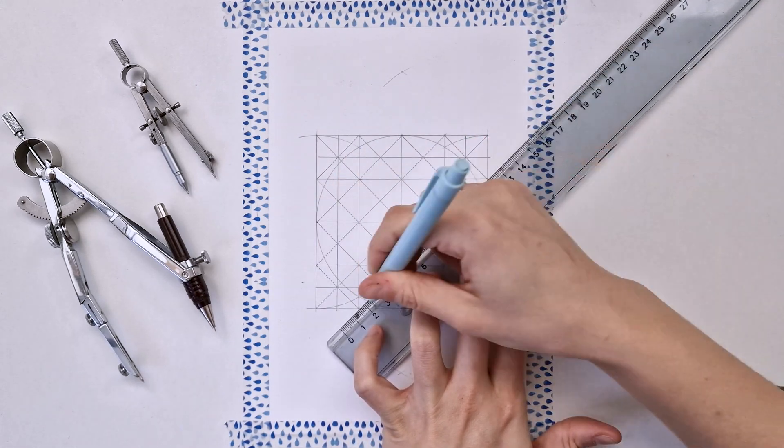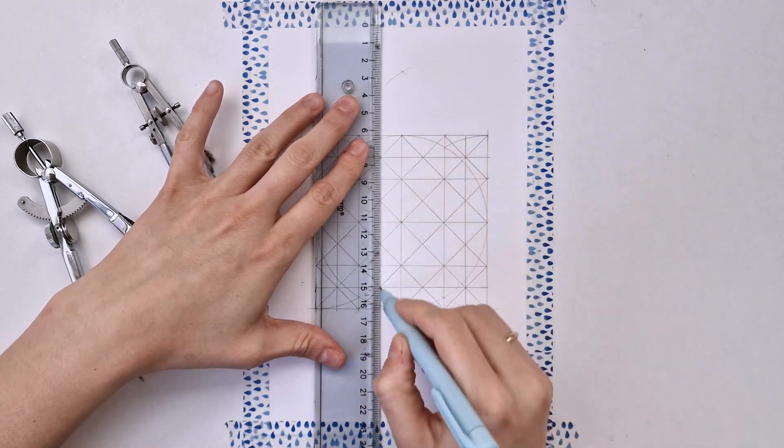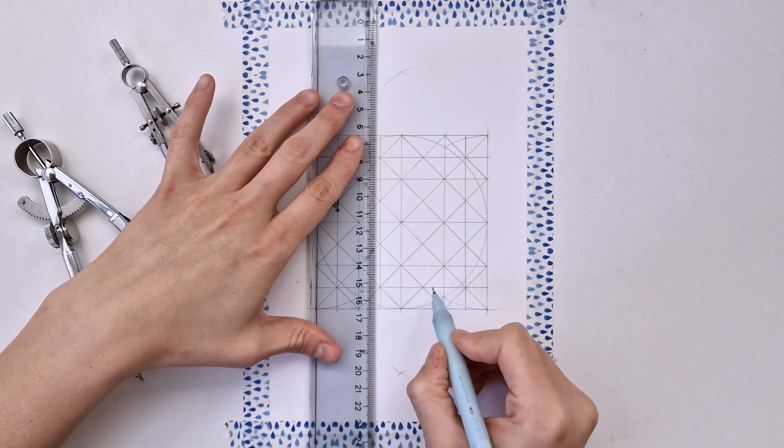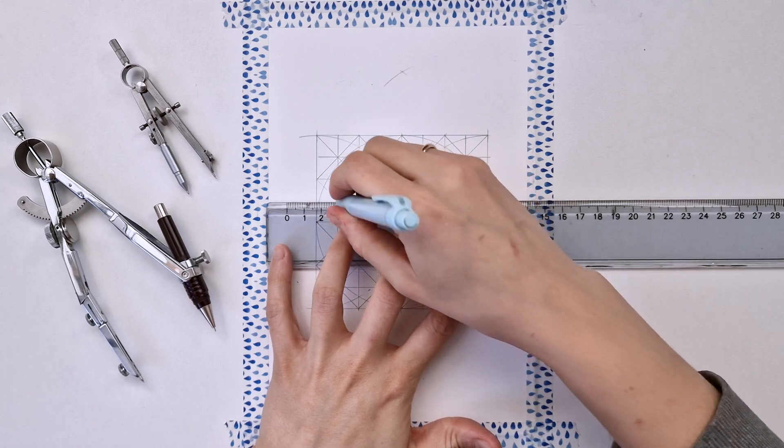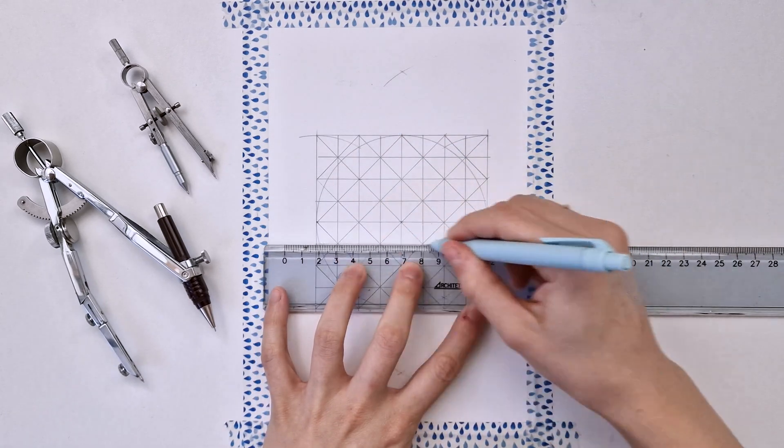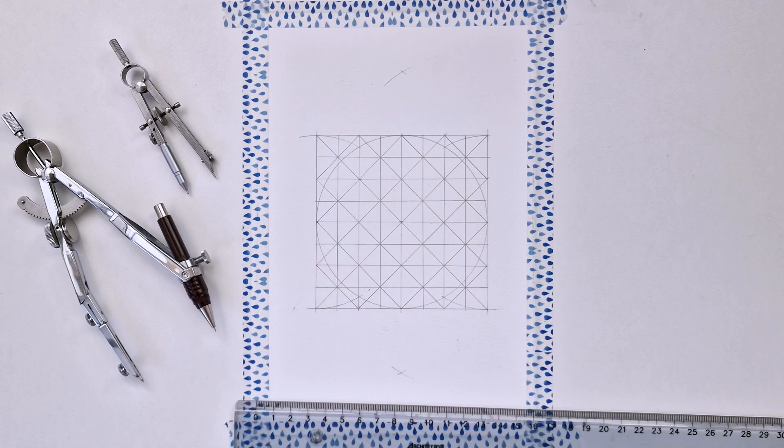So you just keep adding diagonals and then from the intersection of those diagonals you add the horizontal lines, vertical lines, and you keep dividing your square. Now you can even go further and divide each of these tiny squares by adding the diagonal and then the horizontal and vertical lines, so you can keep doing it.